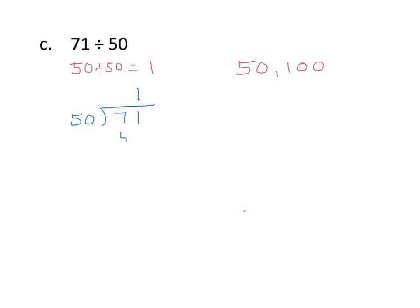1 times 50 is 50, so I have 1 fifty in 71. Now I'm going to find the difference, and I get 21. As I mentioned earlier, we want to make sure that our difference, when we're done subtracting in a division problem, must be less than the divisor. Indeed, 21 is less than 50. So we're going to now put our remainder in. So it's 1 with a remainder of 21.